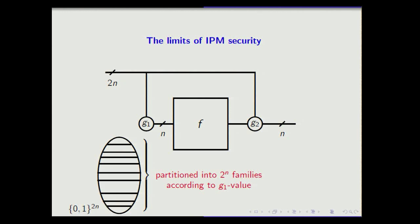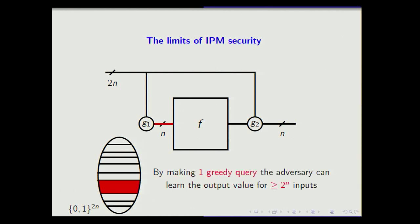When I make a query, it's like selecting a slice from that oval. Since there are 2^n families and the oval has size 2^(2n), the average family size is 2^n. By choosing the biggest slice, I can learn at least 2^n inputs. With two greedy queries choosing the two biggest slices, I can learn 2 × 2^n inputs and break this compression function in two queries — regardless of what g1 and g2 are. The information-theoretic adversary can compute pre-images and layer sizes without difficulty.